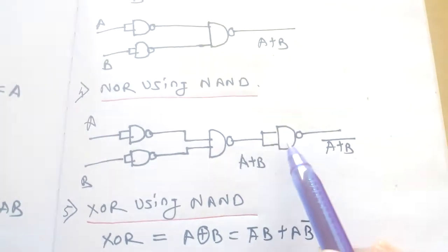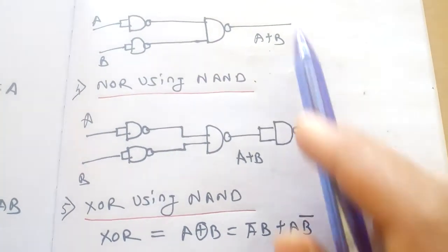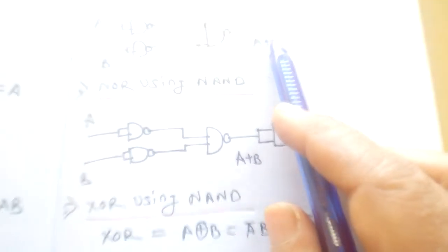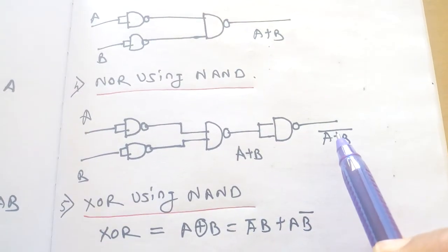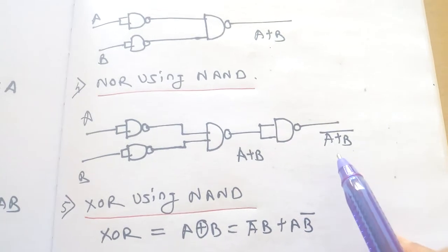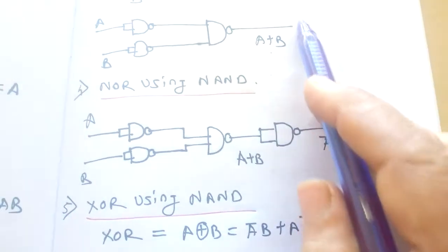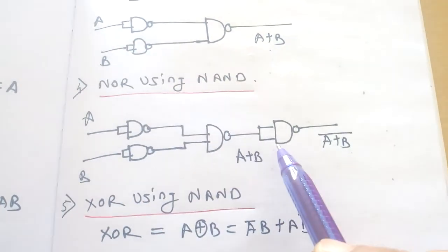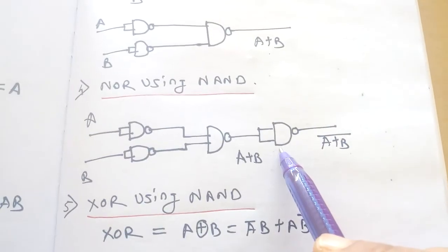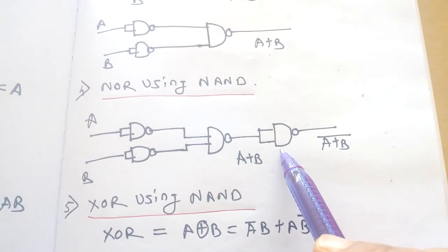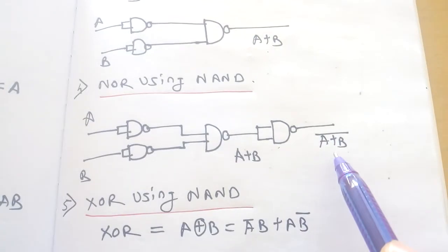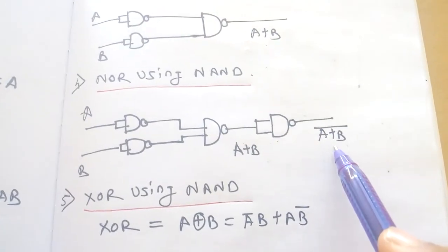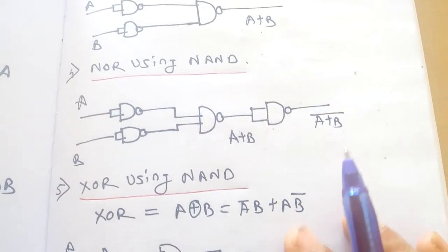Now, to construct the NOR gate using NAND gates, take the OR gate we just built and add one NOT gate — implemented as a NAND gate — at the output. This gives you the NOR gate.